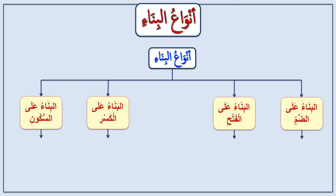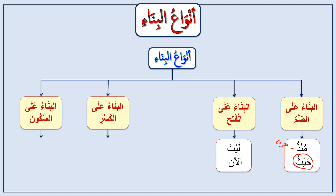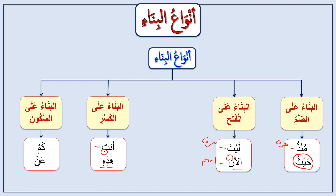Examples: Bina' 'ala al-dhamm — like haythu (where), which is an ism mabni 'ala al-dhamm. Bina' 'ala al-fath — like al-ana (now), an ism mabni 'ala al-fath; also layta (I wish), a particle mabni 'ala al-fath. Bina' 'ala al-kasr — like anti (you, singular feminine) and hadhihi (this, feminine). Bina' 'ala al-sukun — like kam (how many). These are the four types of bina'.